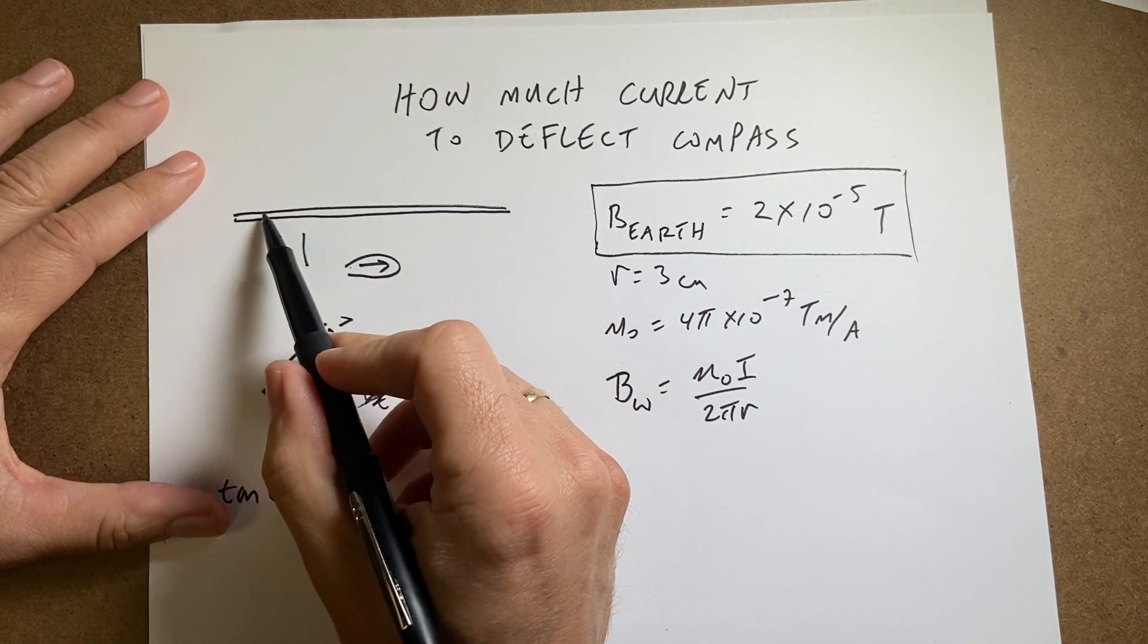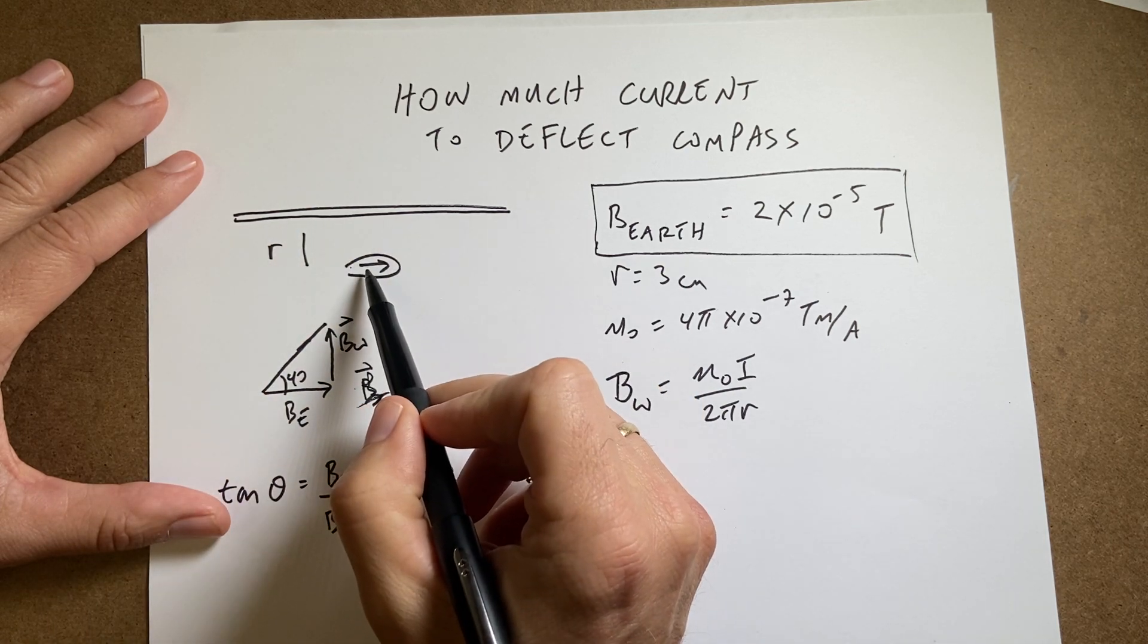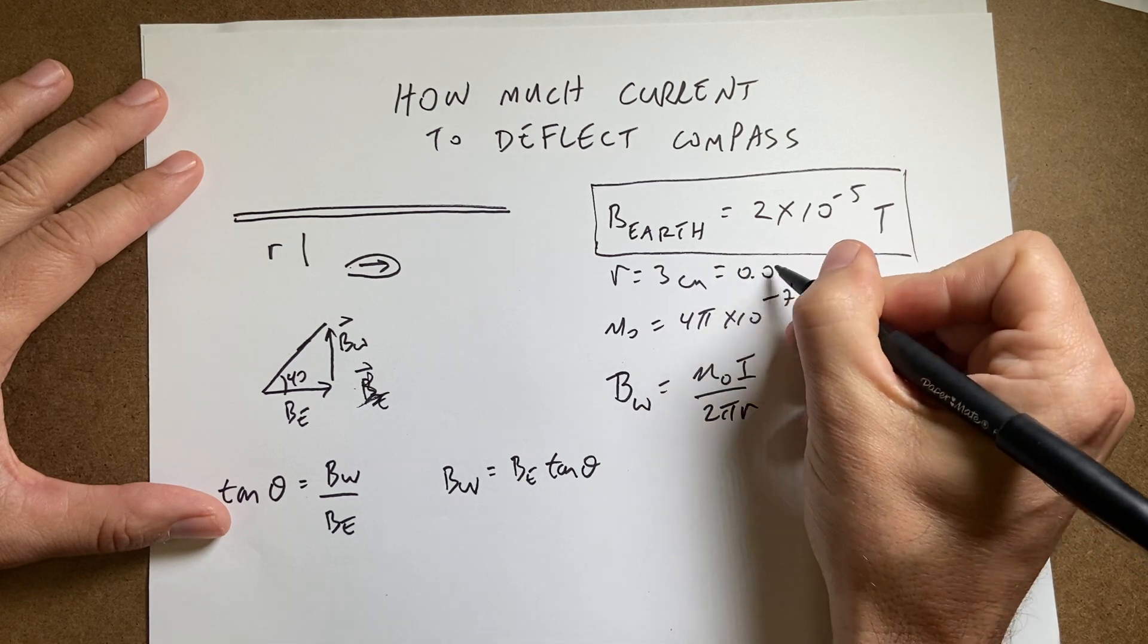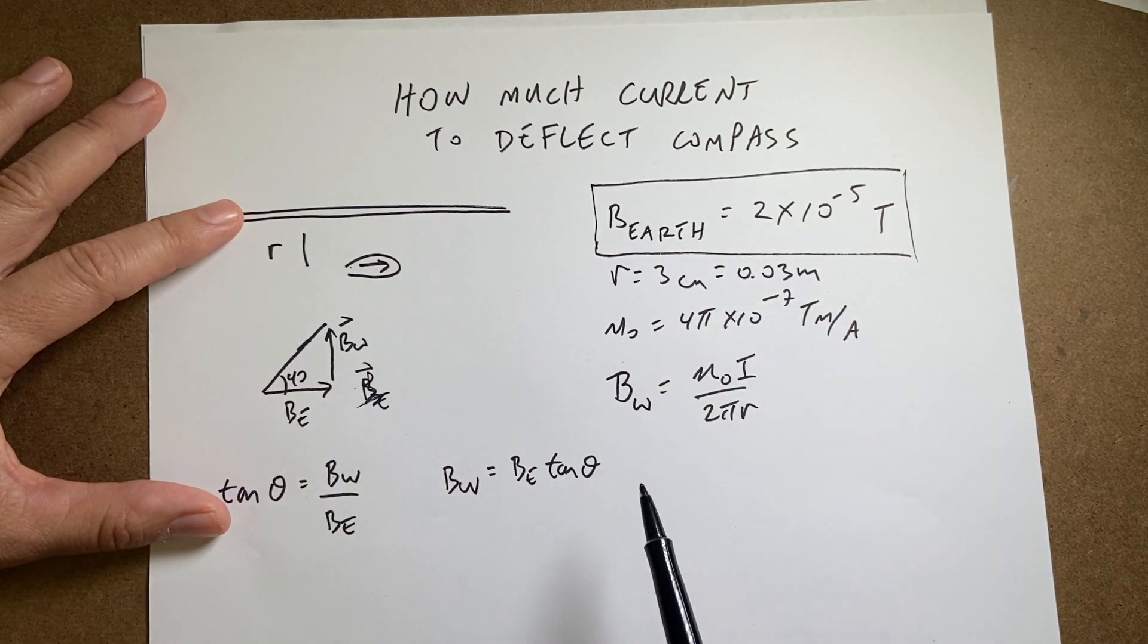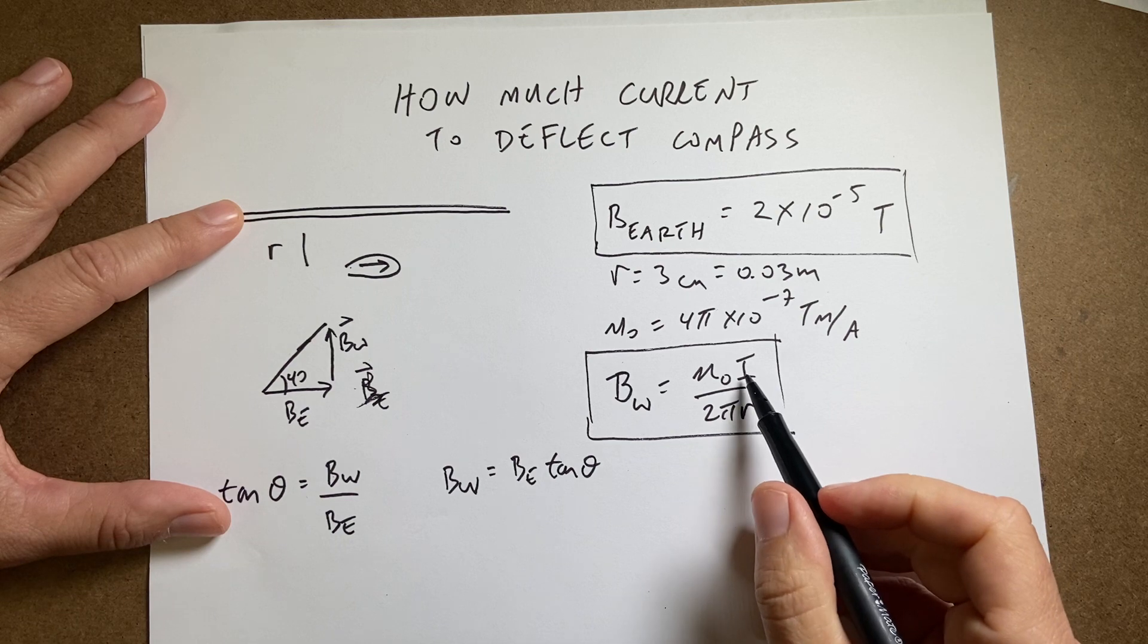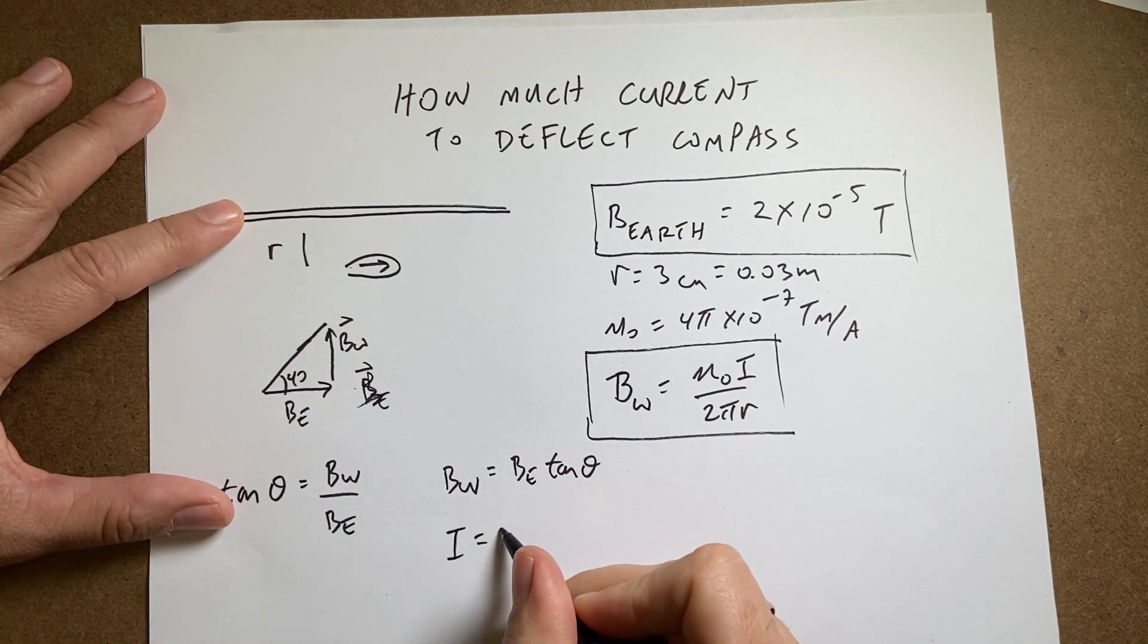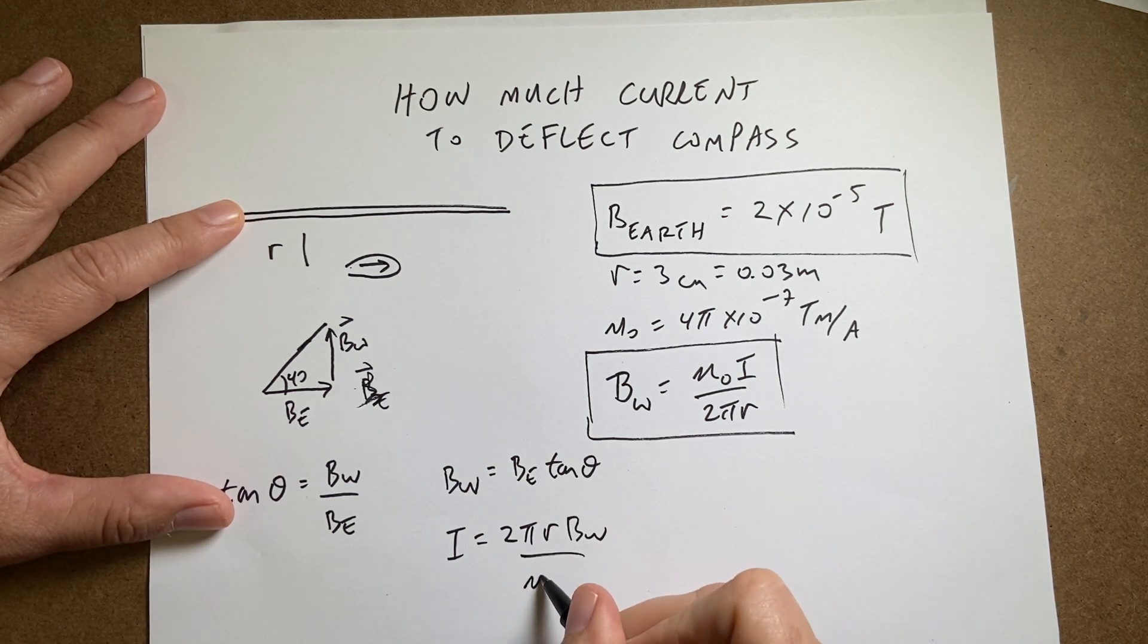The other thing is, now that I know I have this wire carrying a current, and I know the distance is 3 centimeters, or 0.03 meters, then I can use the equation for the magnitude of the magnetic field due to a wire and solve for the current. So, if I solve this for the current, I get I equals 2 pi r B wire over mu naught,